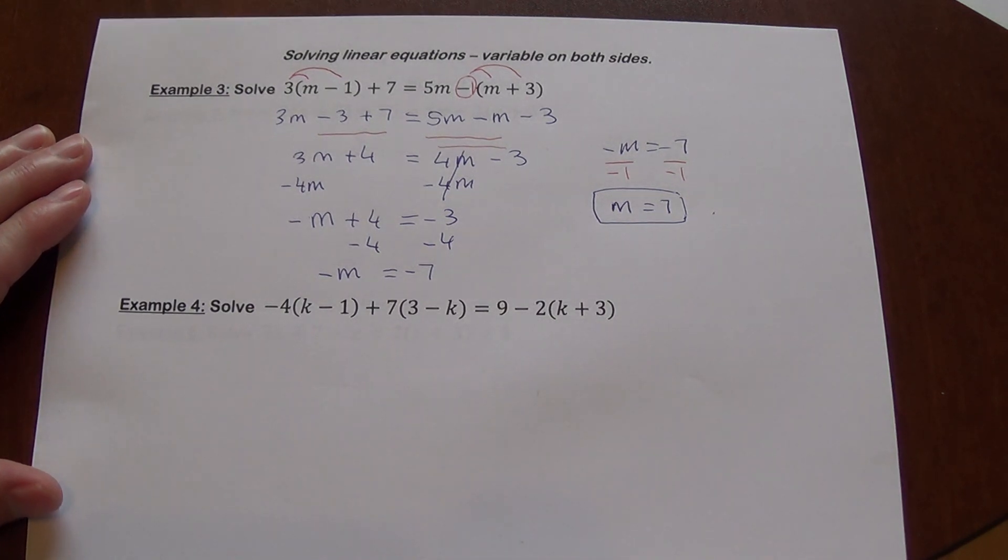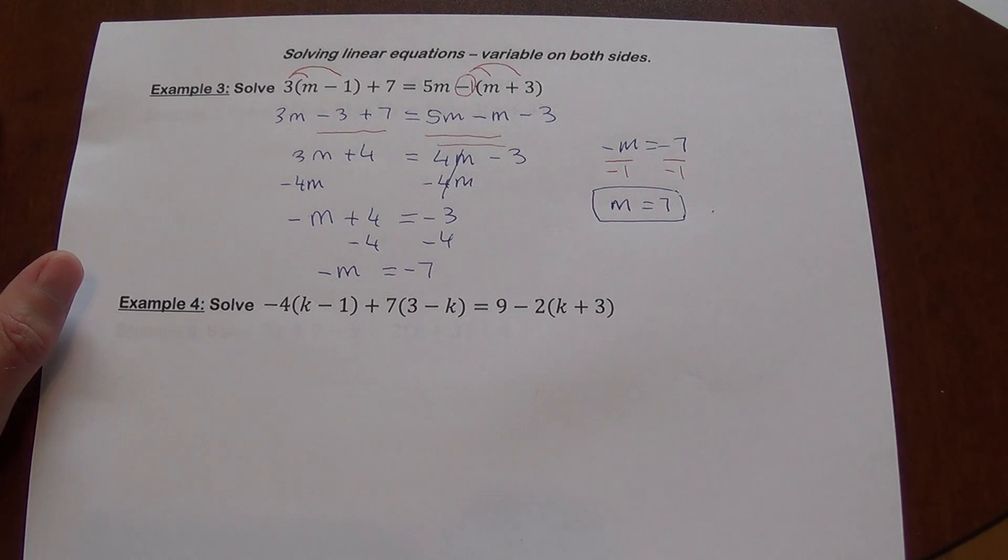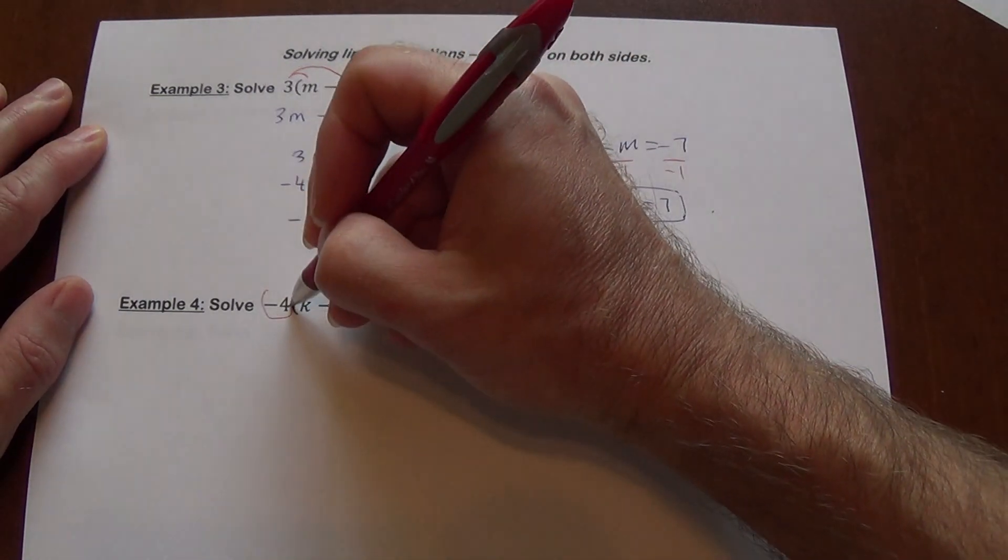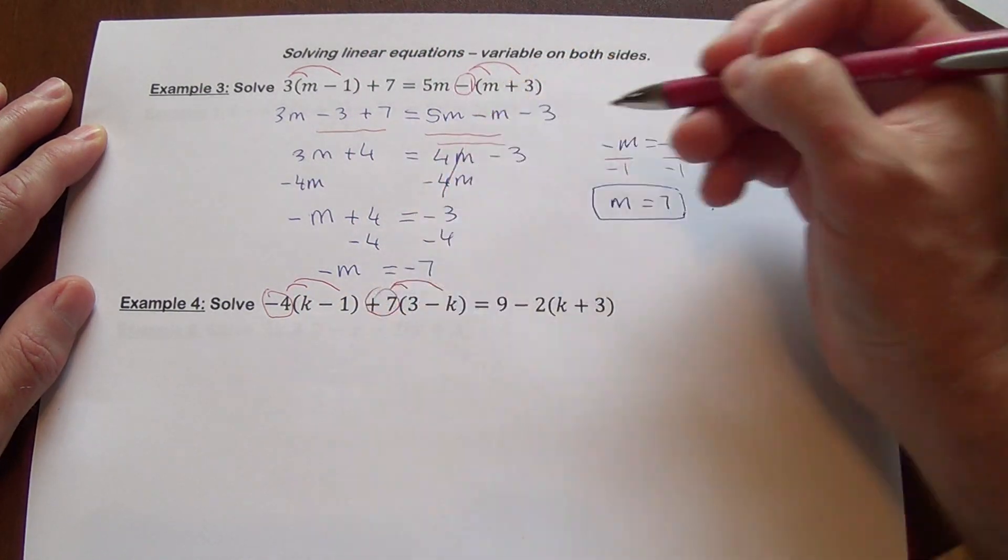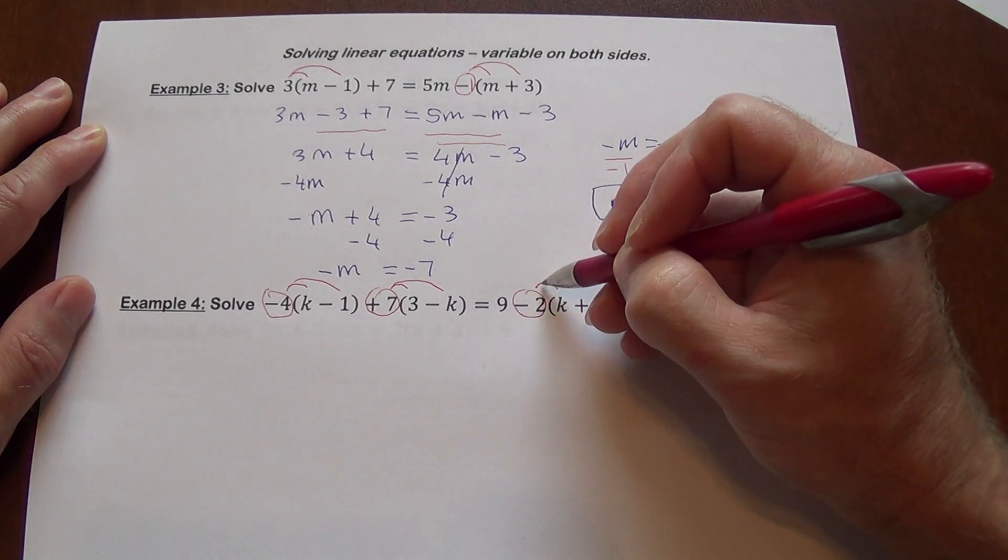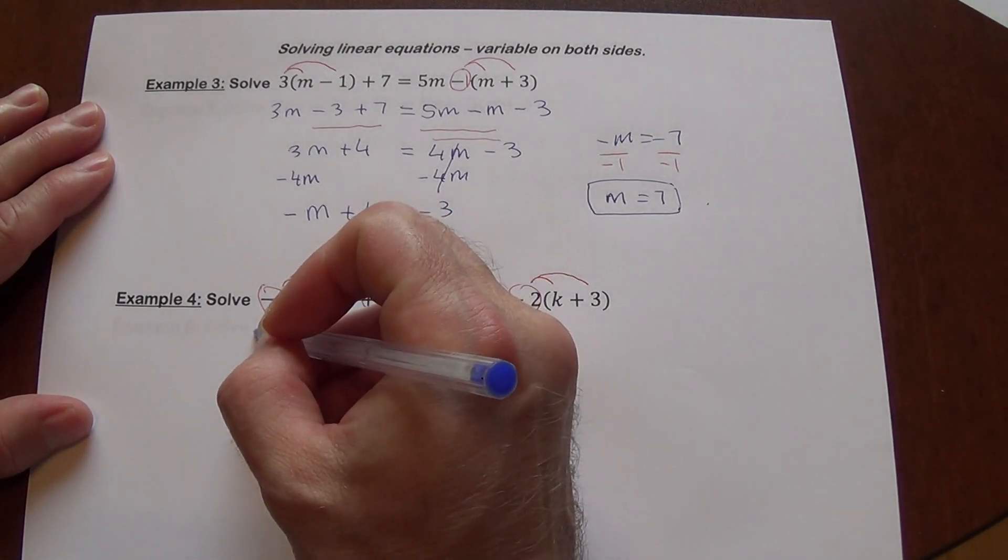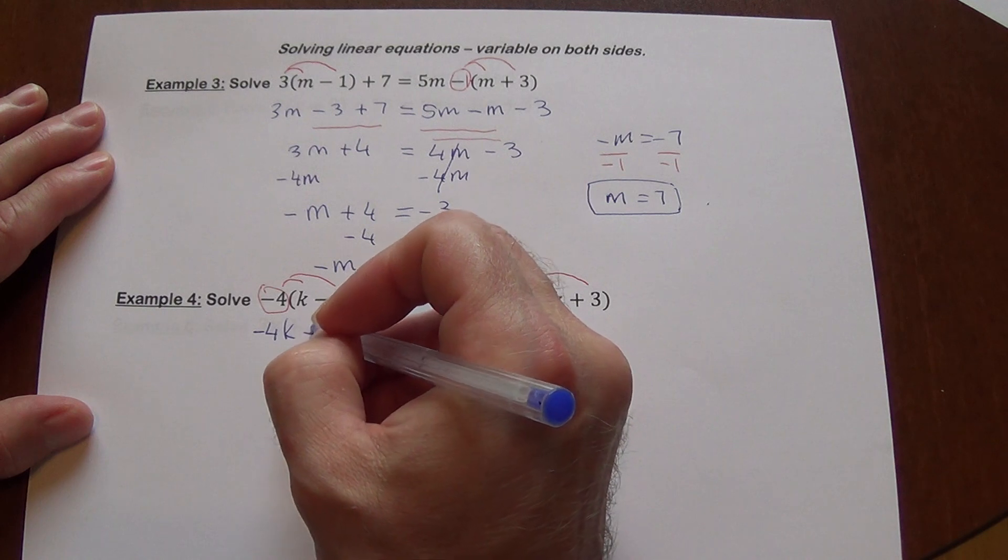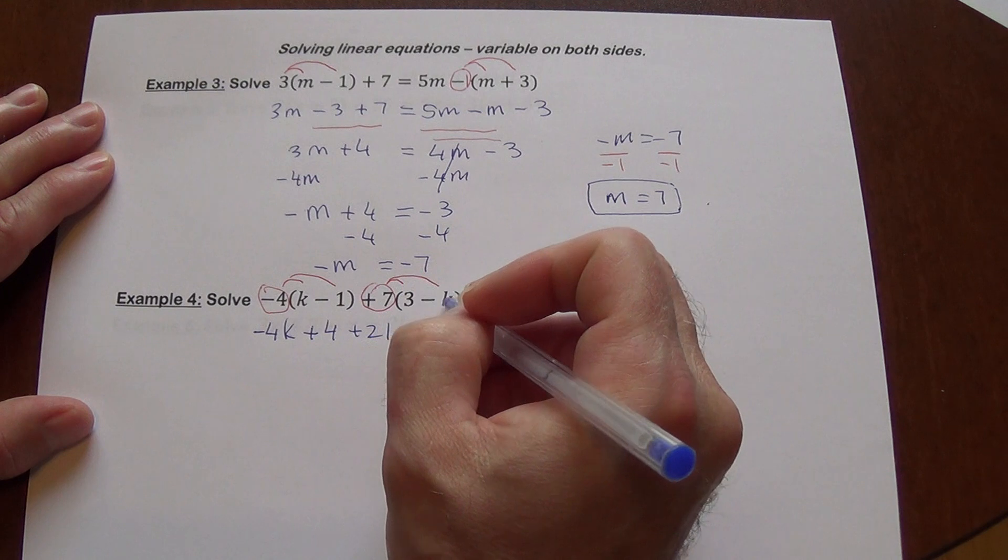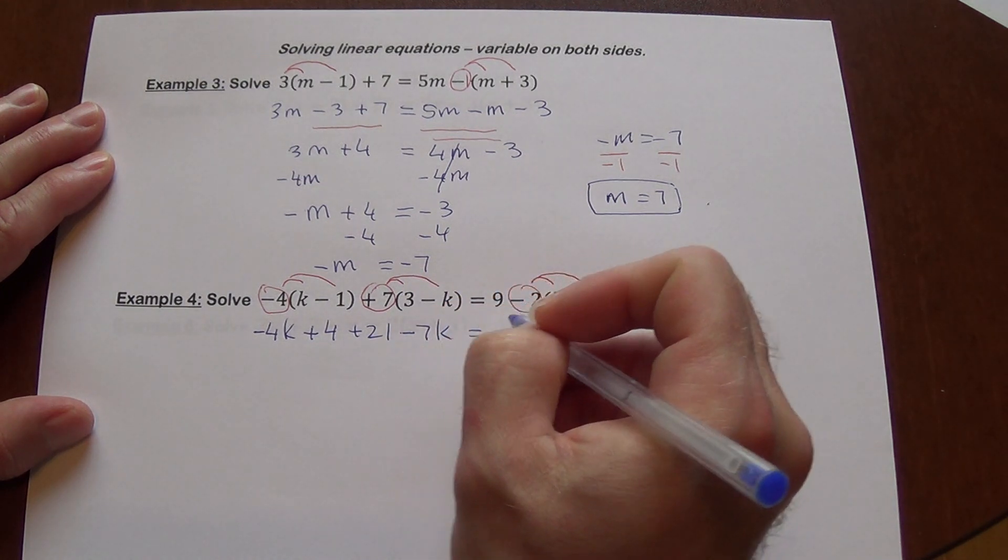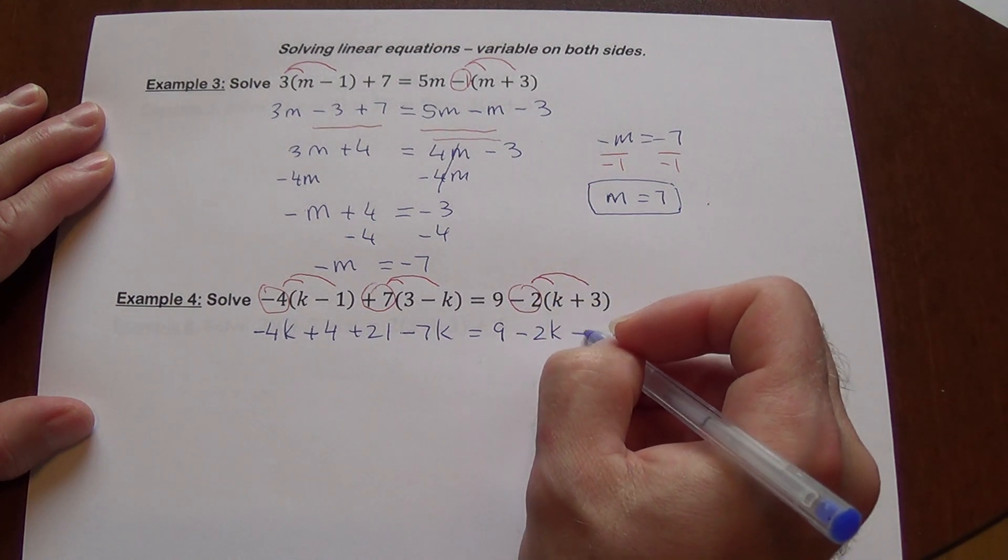You can see how busy example 4 is, but as long as we follow the same approach, it's really not going to be that difficult. So here, remember, you need to distribute negative 4. Here we have to distribute the 7, positive 7. Here we have to distribute, as you guessed, negative 2. So, negative 4 times k is negative 4k, negative 4 times negative 1 is positive 4, 7 times 3 is plus 21, 7 times negative k is negative 7k, 9 stays, negative 2 times k is negative 2k, negative 2 times 3 is negative 6.